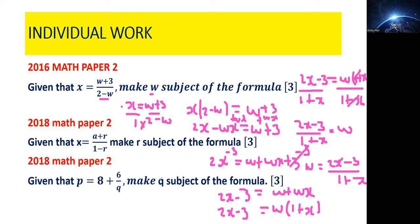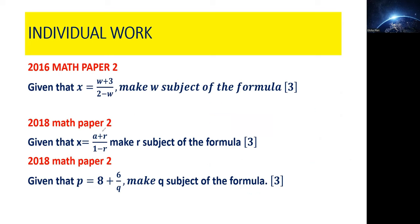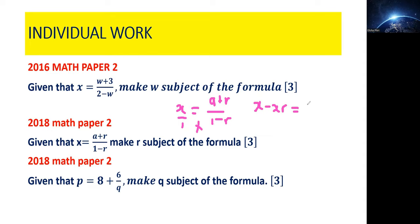We are done. This is the same as writing w equals 2x minus 3 over 1 plus x. Now let's attempt the 2018 question. Given that x equals a plus r over 1 minus r, make r the subject of the formula. It's almost the same method. Introduce a 1, then cross-multiply. x times 1 minus r gives x minus xr, which equals 1 times a plus r, giving a plus r.